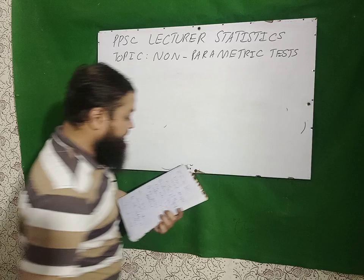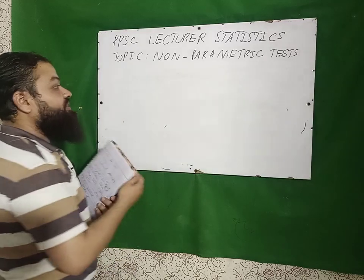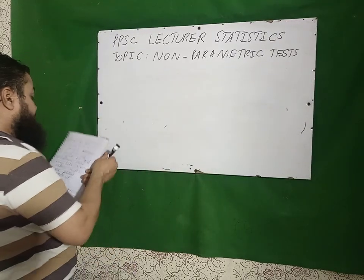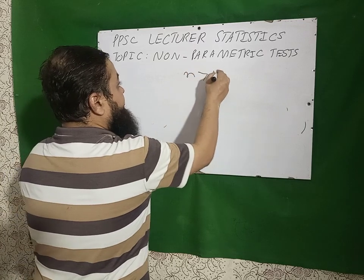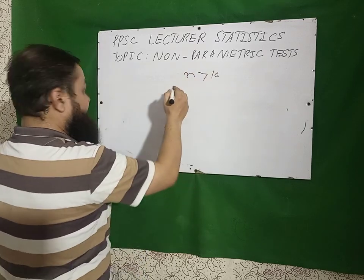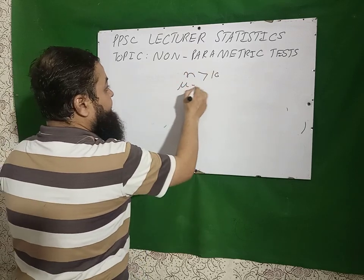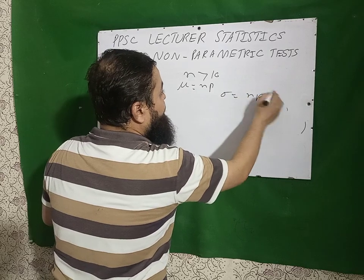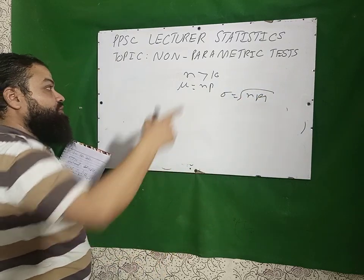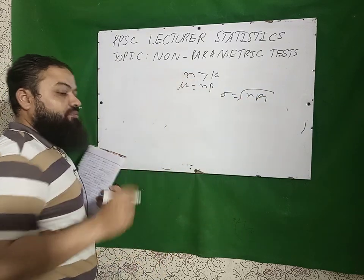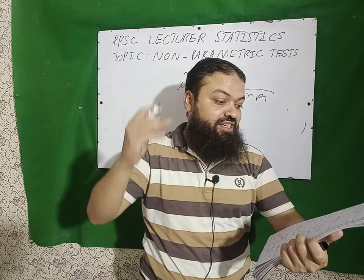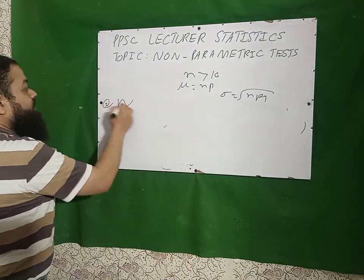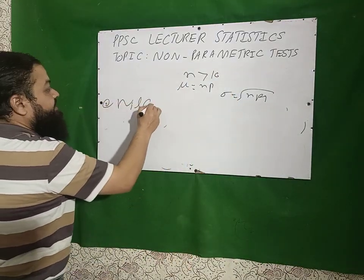The sign test becomes normally approximated when n is greater than 10 — a very important question. The mean is np and sigma is √(npq). We use the normal approximation to the binomial distribution in the sign test when n > 10.